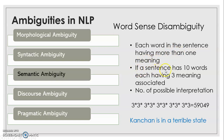For example, if a sentence has ten words and every word has three meanings associated with it, then the number of possible interpretations is three to the power ten — that is 59,049 possible meanings for a particular sentence. Let us take a simple example: 'Kanchan is in a terrible state.' If you take each individual word, most have one exact meaning. But the word 'state' has two meanings: it can be a mental state or a geographical region.